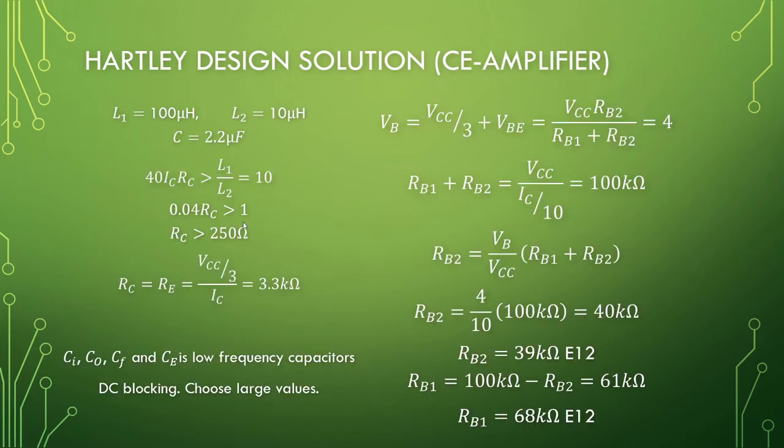The BJT implementation, inductors remain, the capacitor will work out the same. And with this, our RC value will work out that it must be larger than 250 ohms.